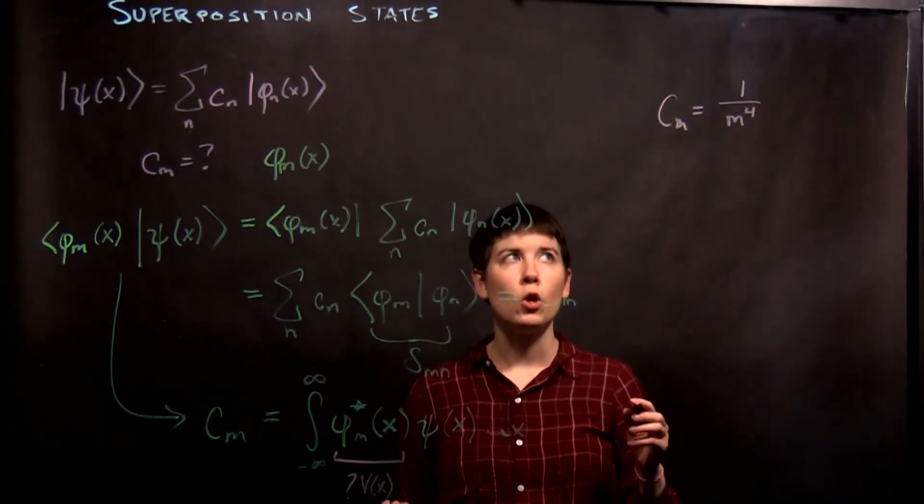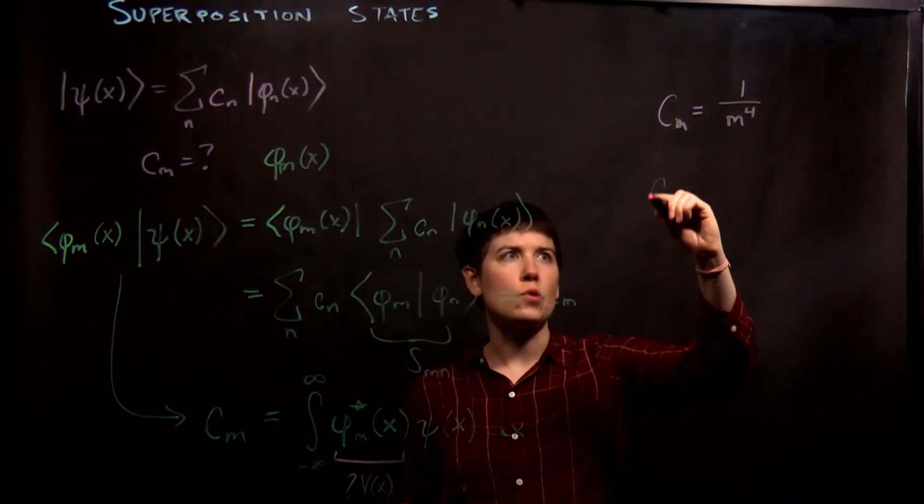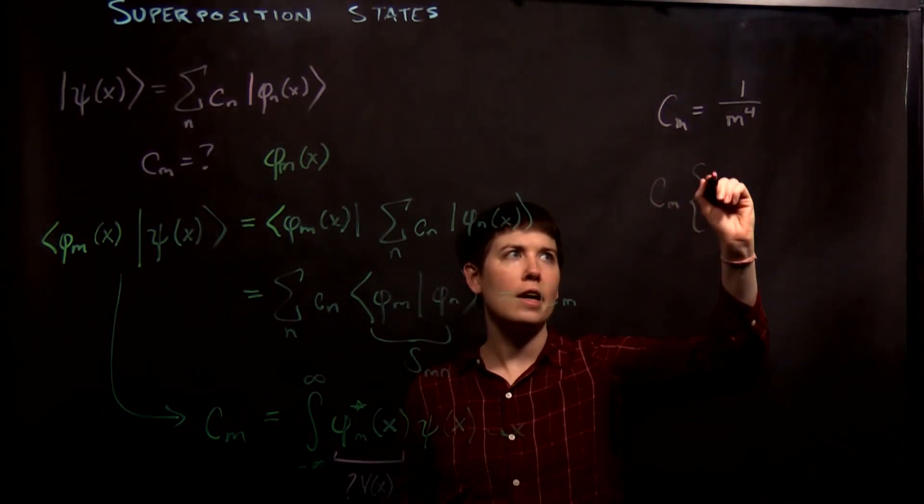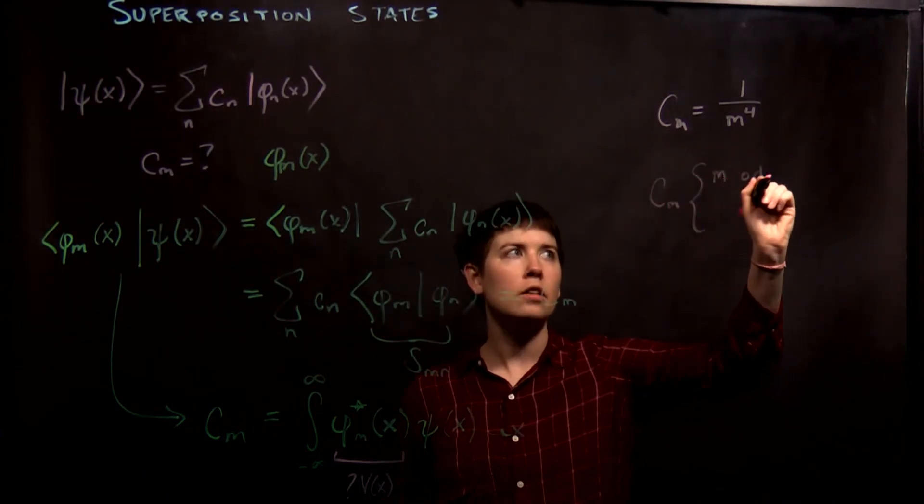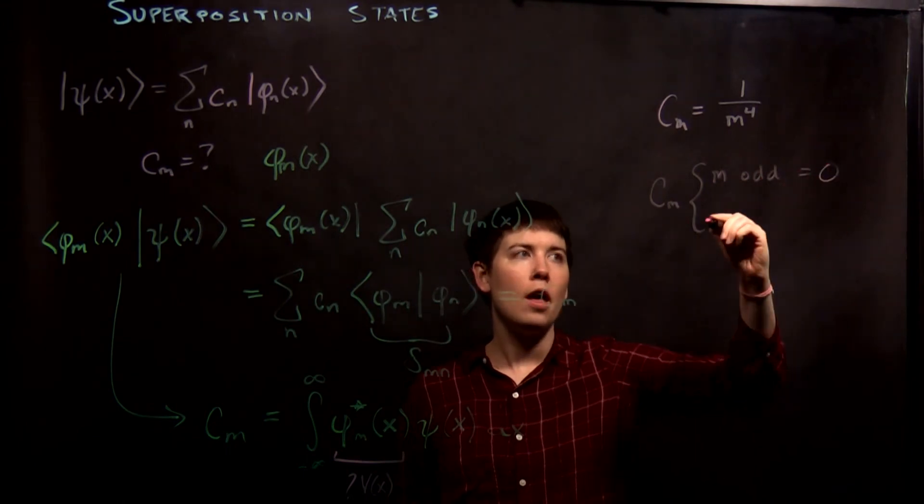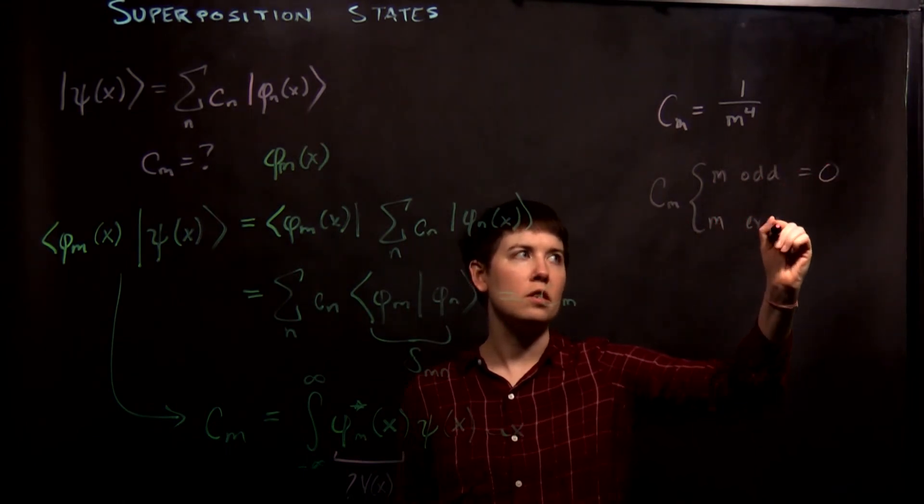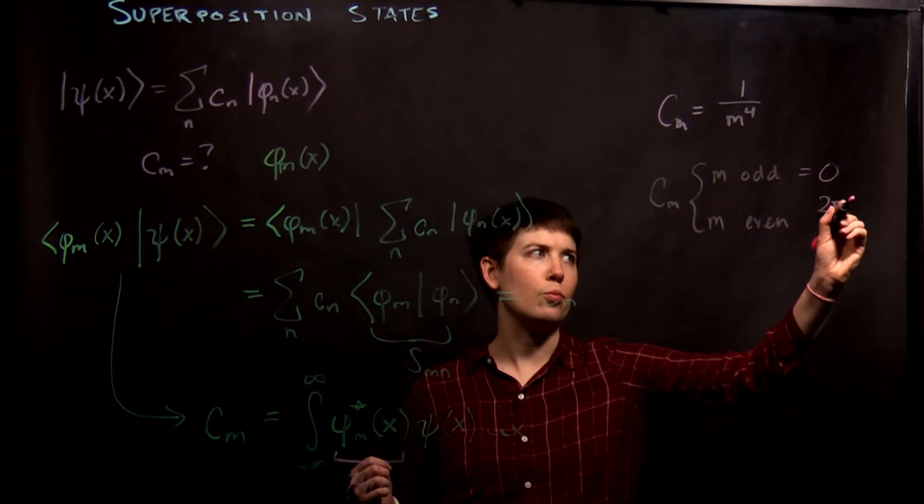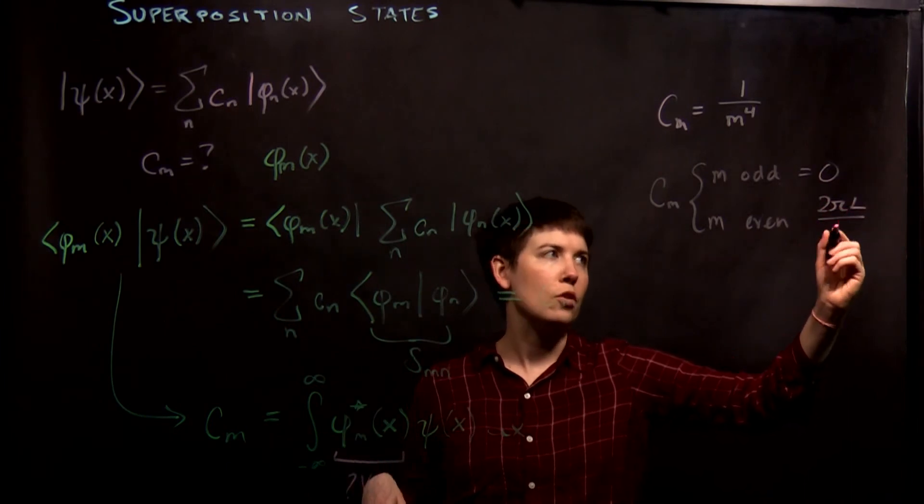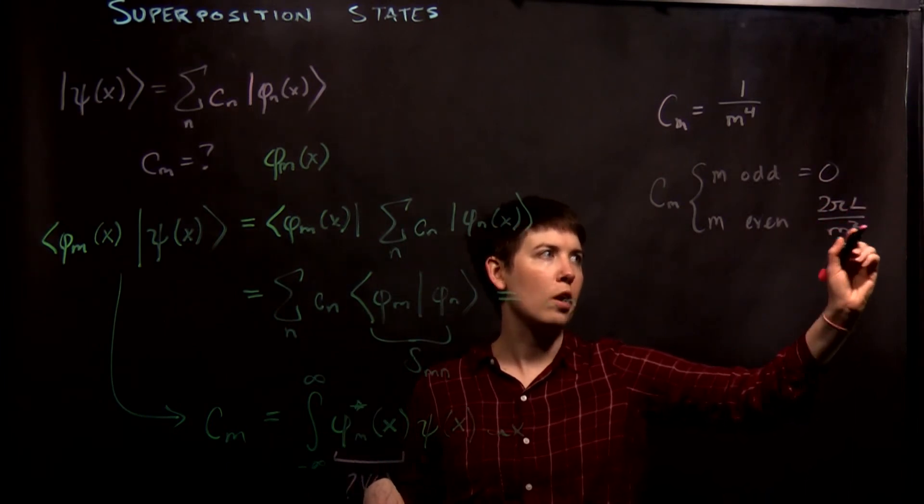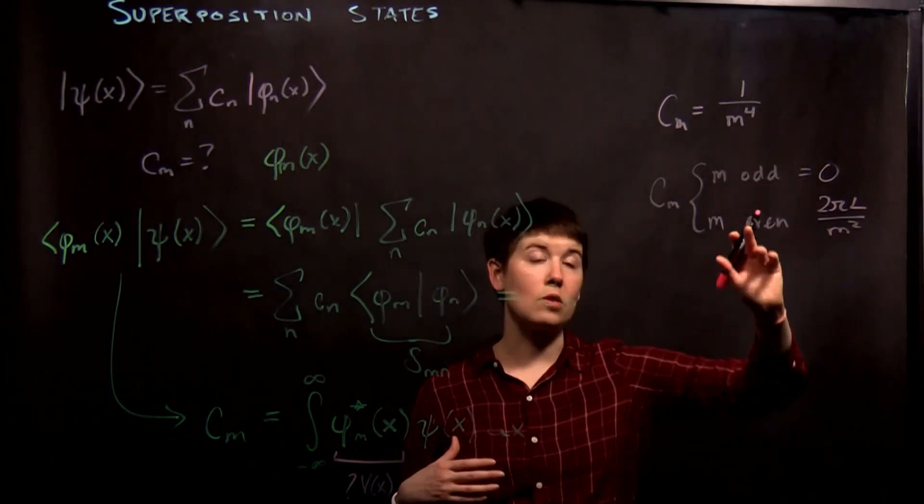You might also see results that are things like if m is odd, it's zero. And if m is even, that's where you have, you know, 2 pi l over, you know, maybe m squared.